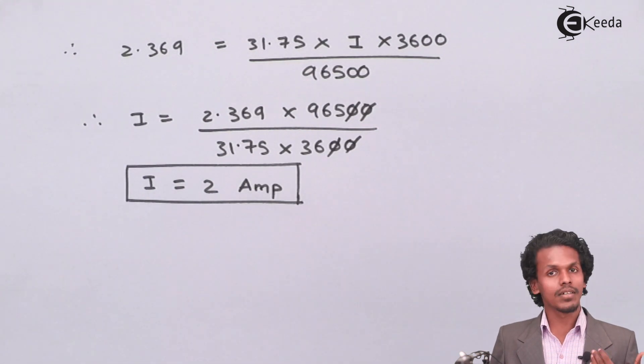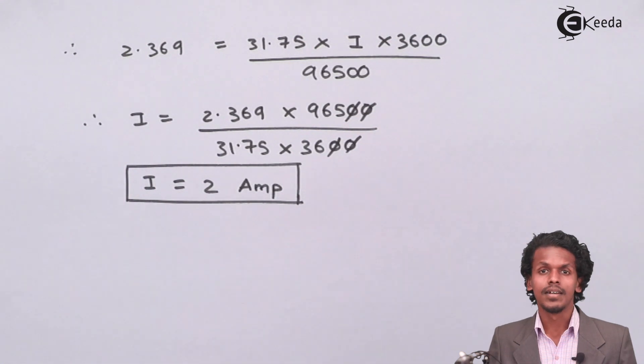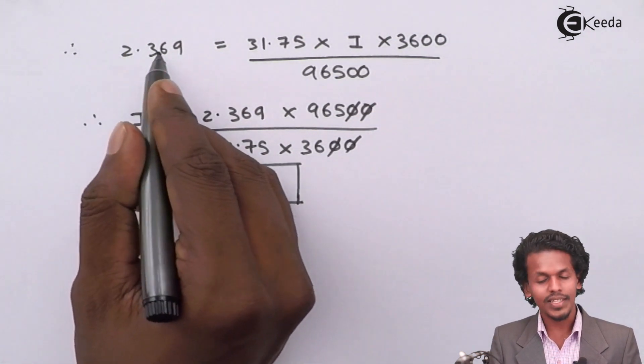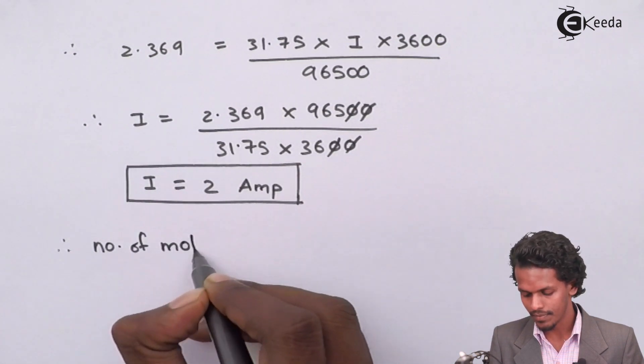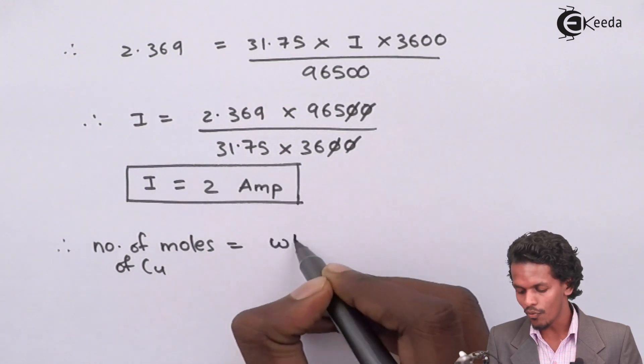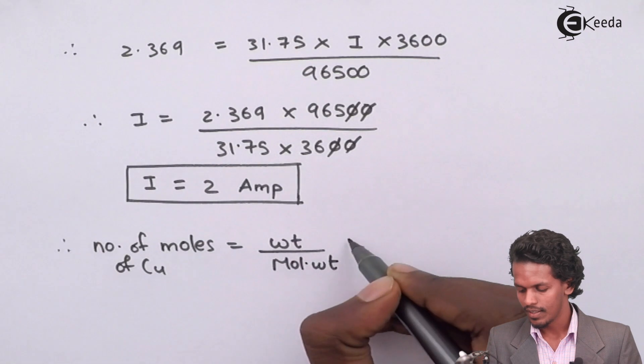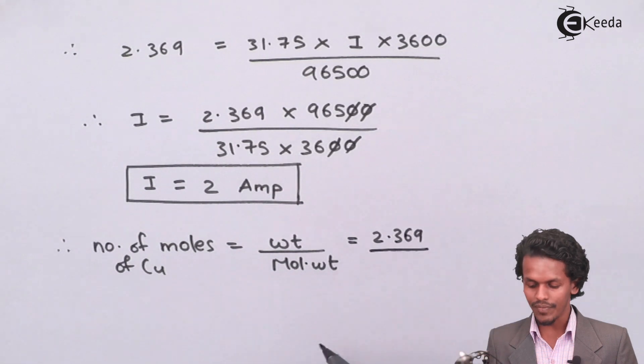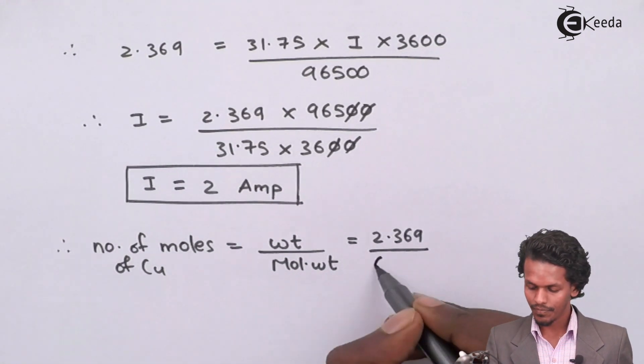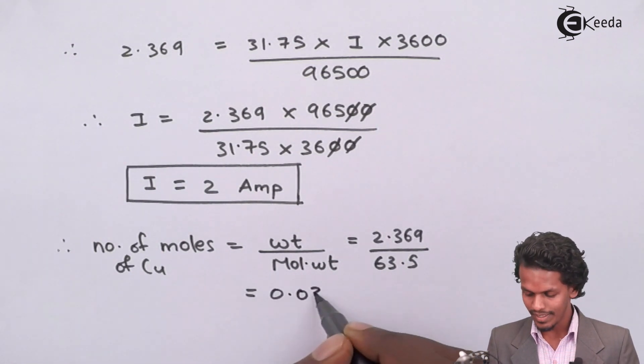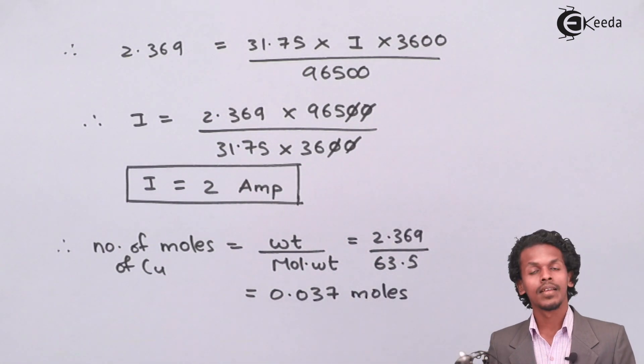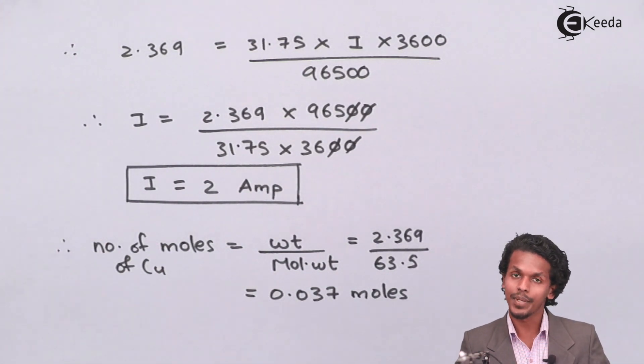So let me tell you the weight that has been deposited in this electrolytic process is 2.369, and from that we could estimate what would be the number of moles of copper. So the number of moles of copper will be weight of copper divided by molecular weight of copper. So from that, the weight which is provided as 2.369 and the molecular weight which is given as 63.5 will give us an answer of 0.037 moles of copper.